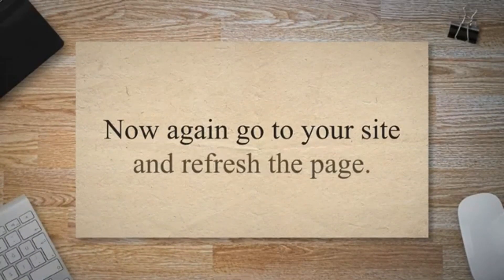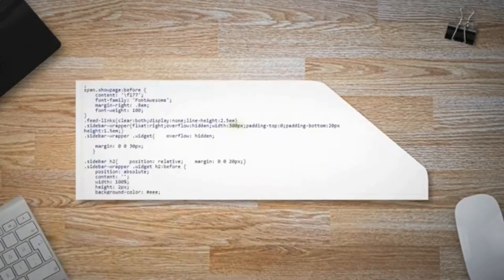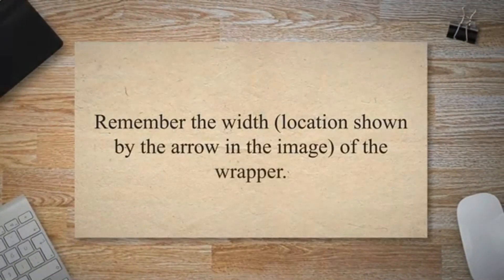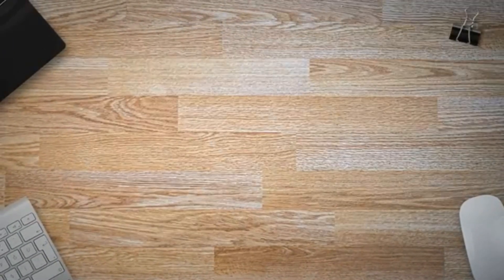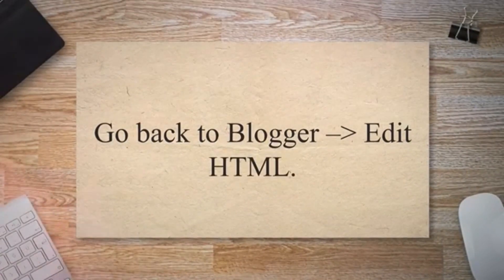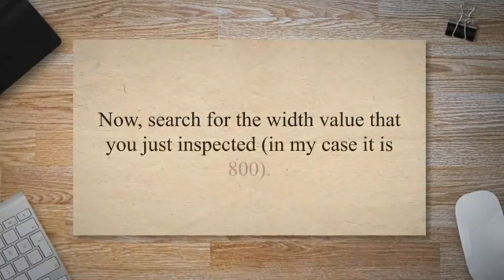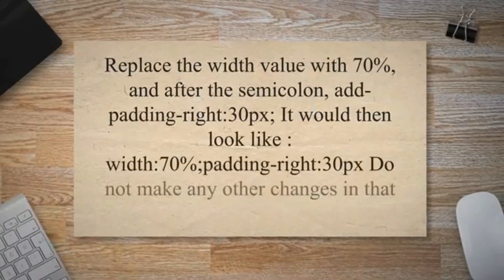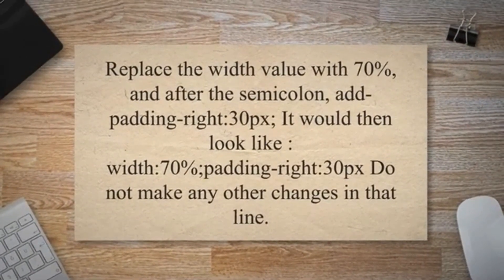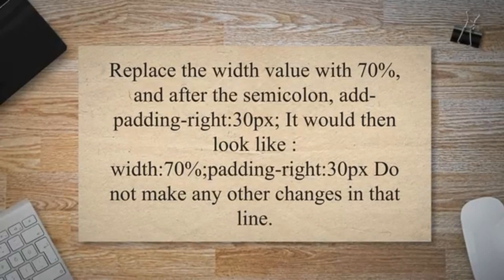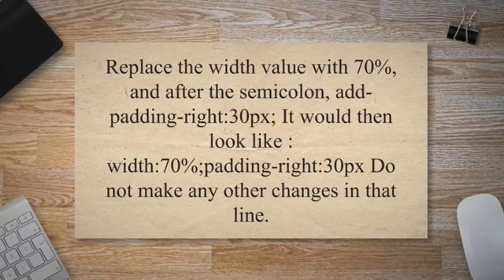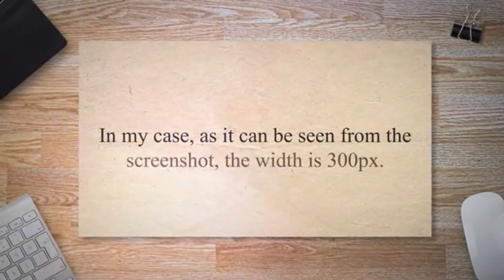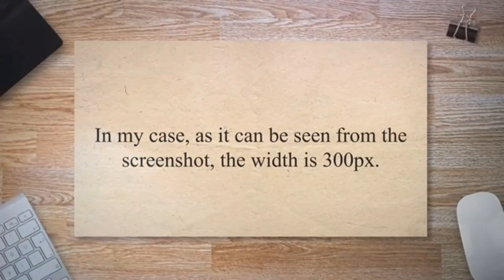Now go to your site and refresh the page. Next, inspect the width of the content — #MainWrapper. Remember the width of the wrapper shown by the arrow in the image. Go back to Blogger Edit HTML and search for the width value that you just inspected — in my case it is 800. Replace the width value with 70%, and after the semicolon, add padding-right: 30px. It would then look like: width: 70%; padding-right: 30px;. Do not make any other changes on that line.